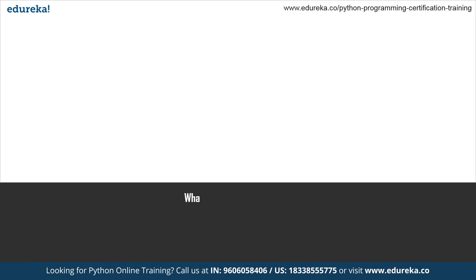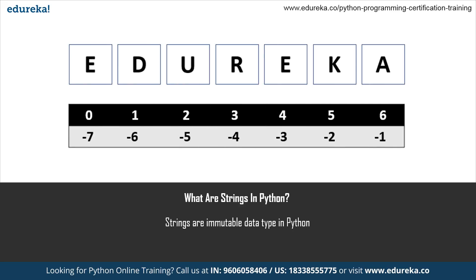A string is an immutable data type in Python which cannot be changed once we declare it in a program. We use single or double quotes to declare strings in Python. Strings are arrays of bytes representing Unicode characters. However, Python does not have a character data type — a single character is simply a string with a length of one.